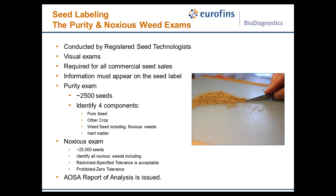The noxious exam is a visual exam done on a much larger portion of the sample, typically 25,000 seeds, and all noxious weeds are identified. The seed analyst can use the all-states noxious weed seed list if the seed lot may be sold anywhere within the lower 48 states, or a state-specific list if the seed is destined for only one state. Noxious weeds can be classified as restricted — acceptable at a certain threshold — or prohibited, where there is zero tolerance and the seed may not be present if the seed is going to be sold.